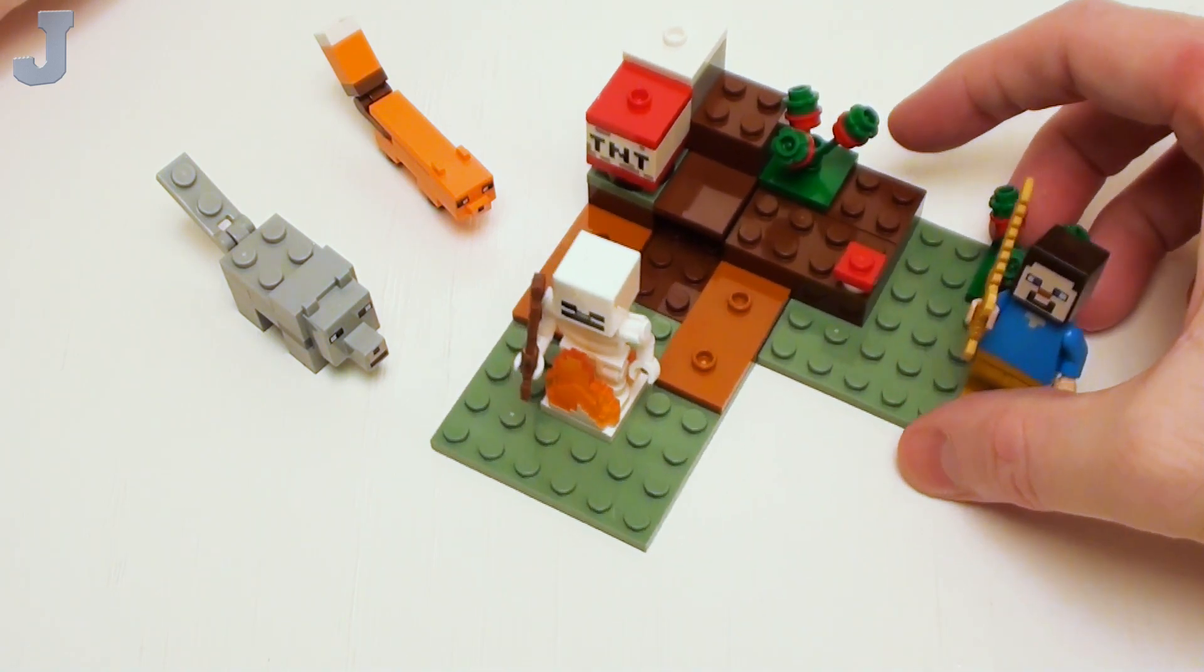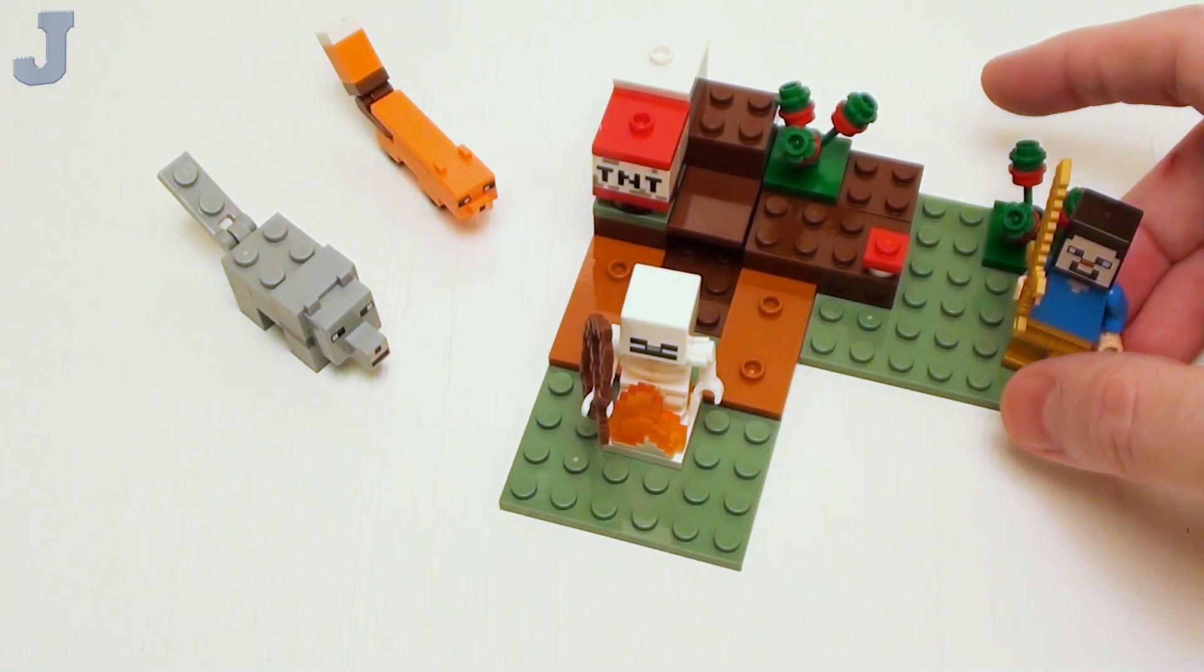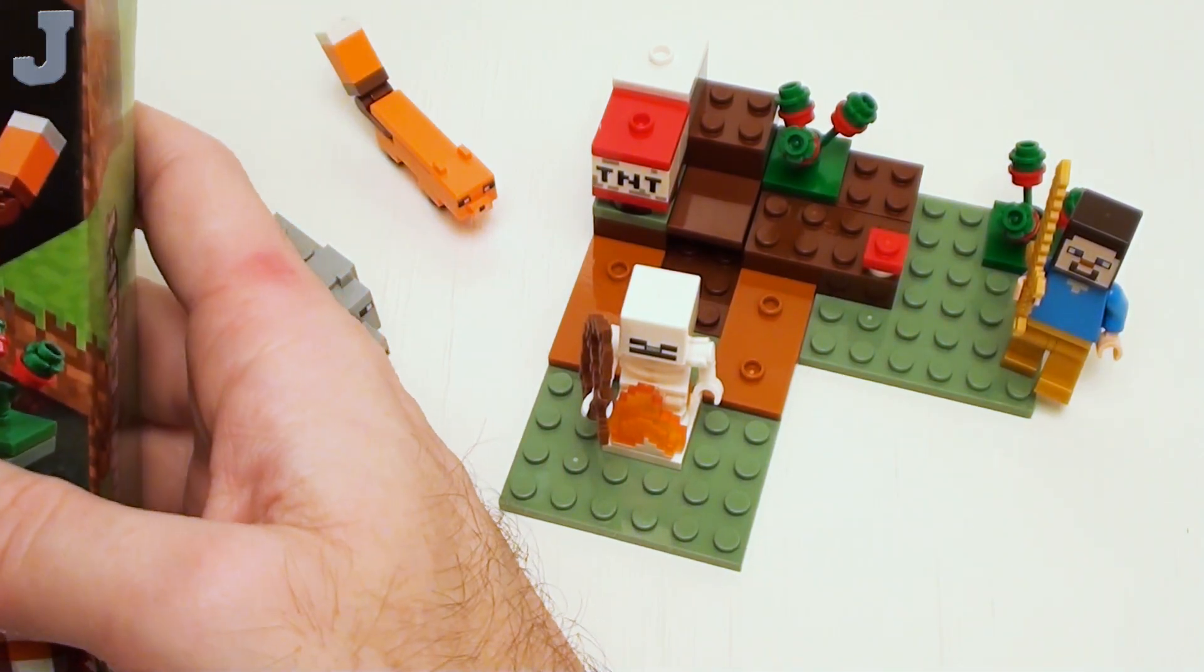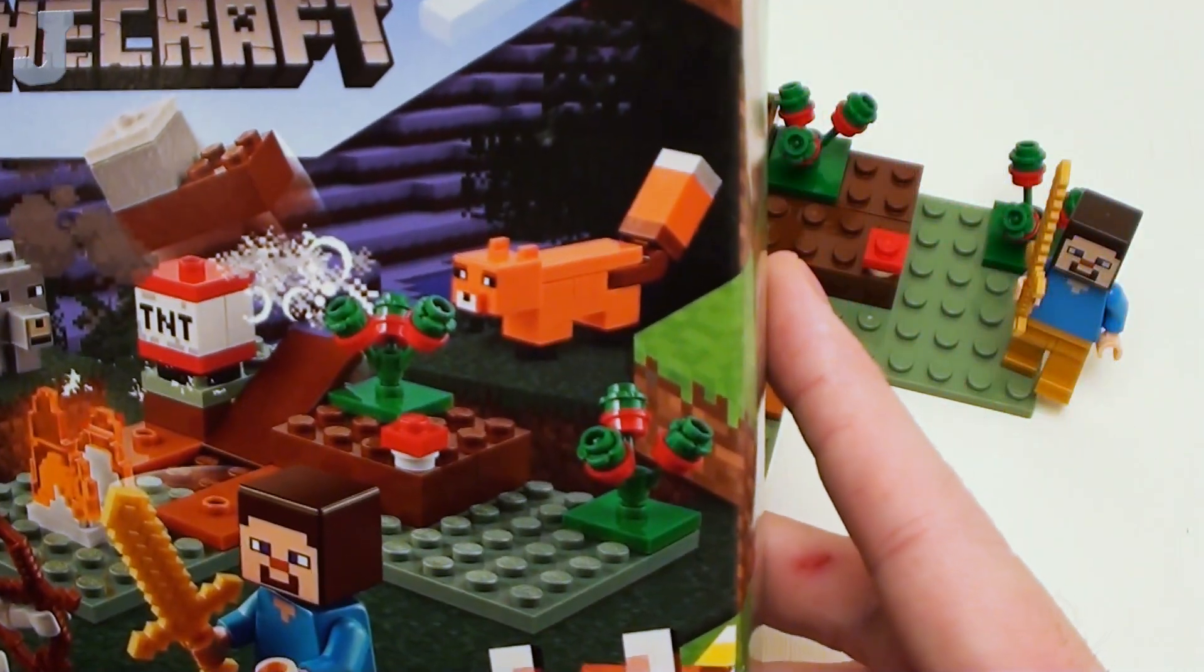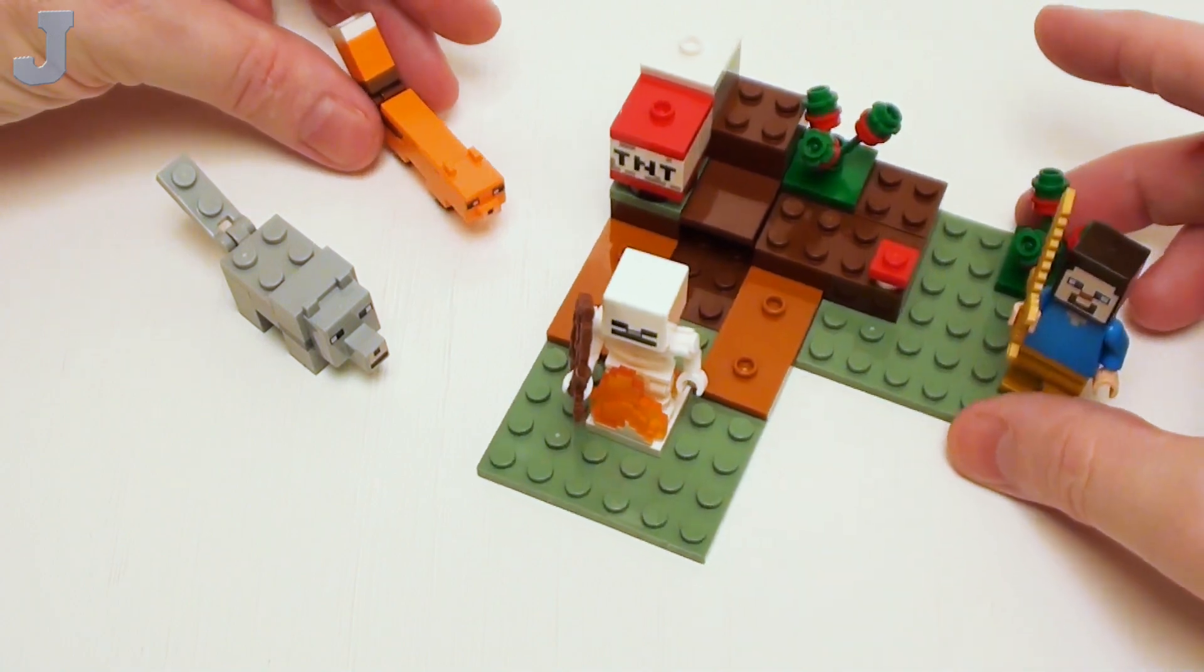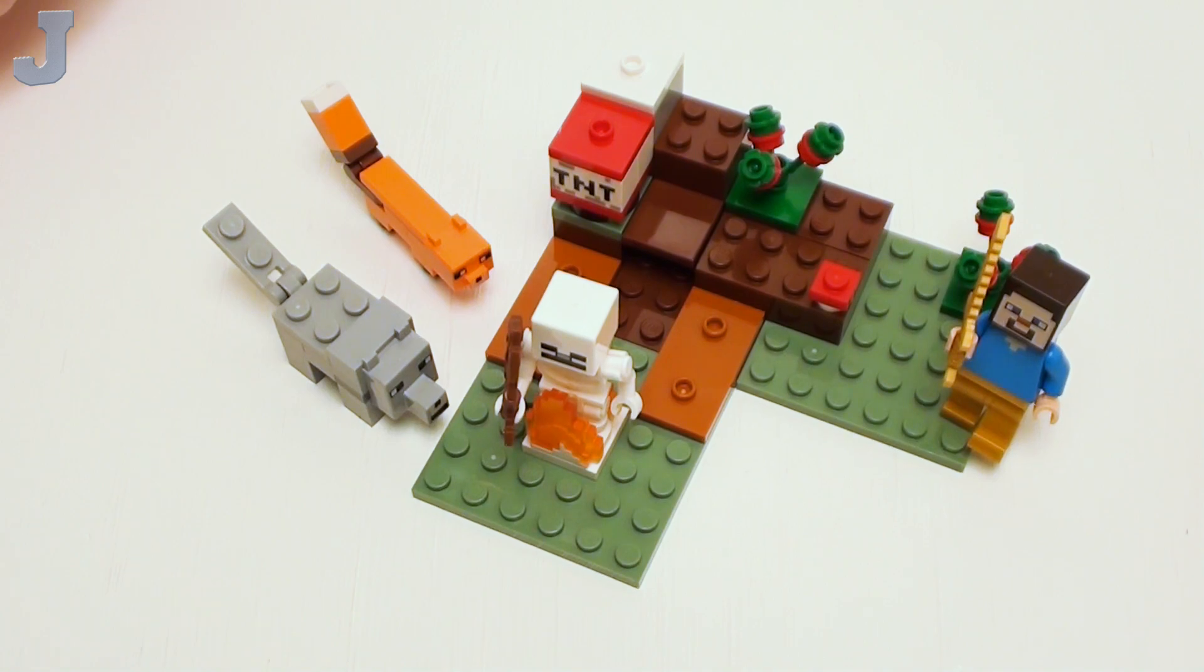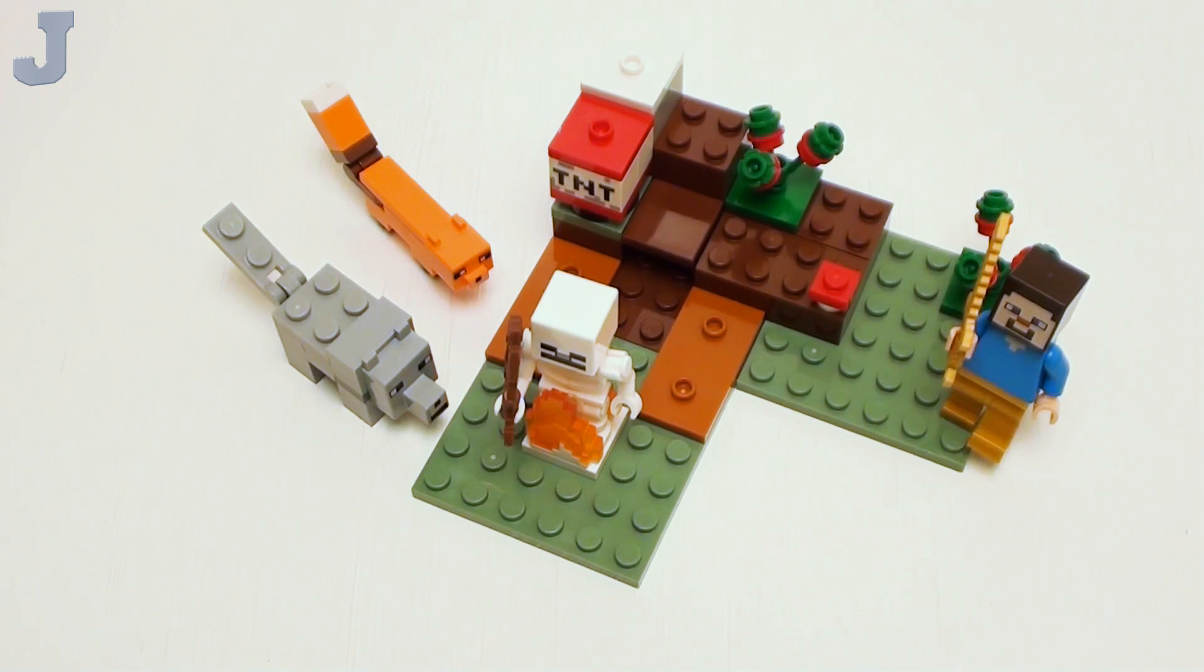For this being a small set, I don't know what it retailed for. This was given to me as a gift. But for it being 74 pieces, I'm assuming it's probably... I don't know. I don't think it was 74 cents. Probably five or six dollars. I don't know. But if you find it on sale for a few bucks, yeah, this is a great little source for parts. Especially for the animal figures. But other than that though, for me as an adult builder, yeah, I would just pass up on this one. Unless you're into Minecraft.